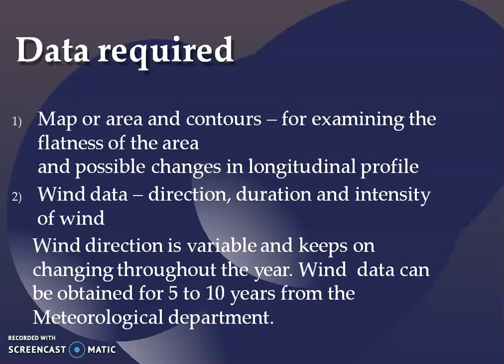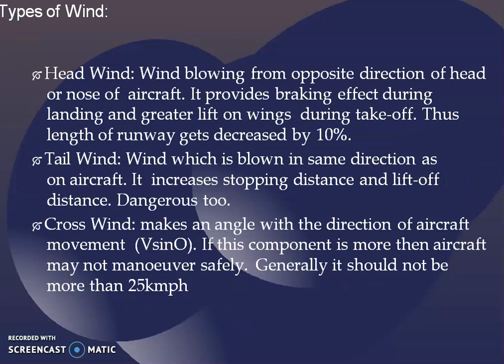What are the data required for this runway orientation? We need the map or the contour area of the runway to determine how far the area is flat or not. To look into the profile of the land, we need the contour details and the area map. Then the next detail what we need is wind data. The direction, duration and intensity of wind is required for about 5 to 10 years. We can get that from the meteorological department, and it will keep on changing day by day, month by month and year by year also.